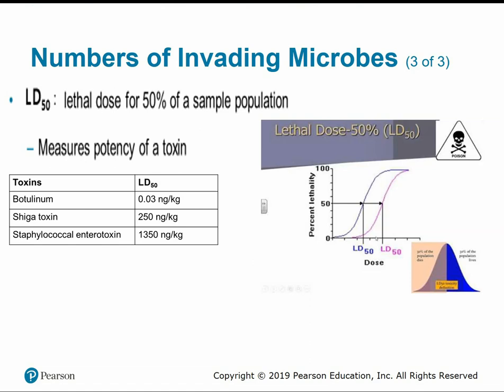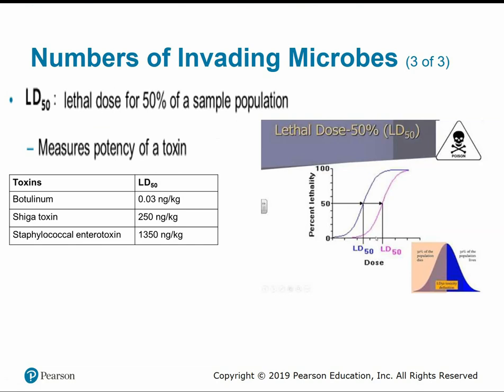The LD50 is the lethal dose for 50% of a population — this measures the potency of a toxin. Different toxins have different potencies. Botulinum toxin requires only 0.03 nanograms to be lethal for 50%, whereas staphylococcal enterotoxin requires a much higher amount.